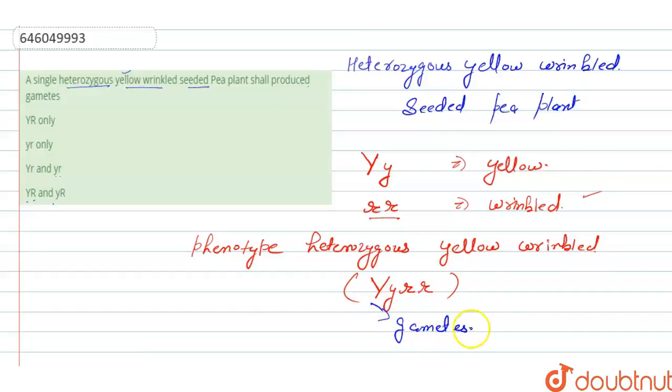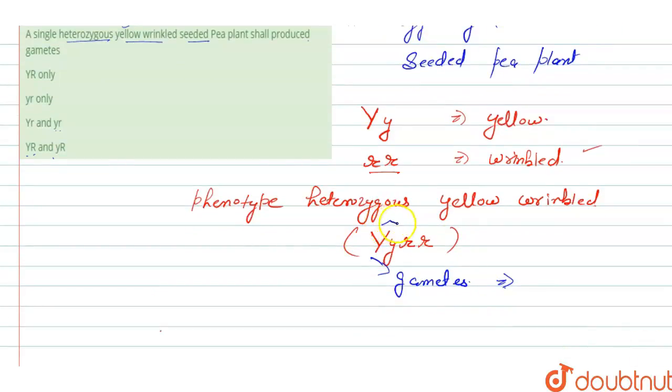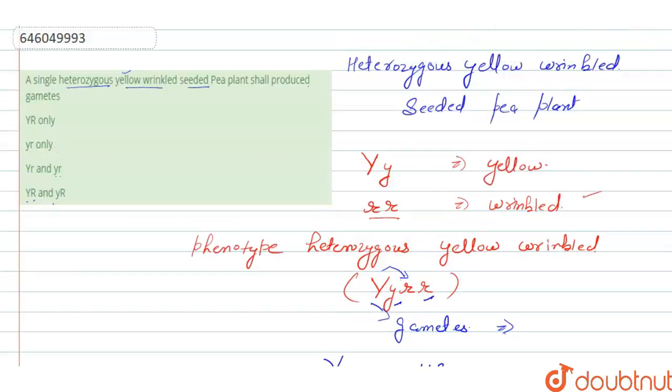Gametes which are formed here is capital Y with small r. This is the first gamete, and second is small y with small r. So here two gametes are formed, which is capital Y and r and small y and r. So in that way, the right answer for this question is option number third, that is capital Y small r and small y and small r.